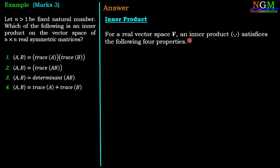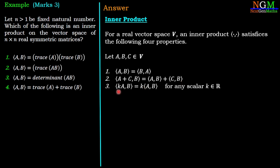For a real vector space, an inner product satisfies the following four properties. Let A, B, C ∈ V. Property 1: ⟨A,B⟩ = ⟨B,A⟩. Property 2: ⟨A+C,B⟩ = ⟨A,B⟩ + ⟨C,B⟩. Property 3: ⟨kA,B⟩ = k⟨A,B⟩ for any scalar k ∈ ℝ.